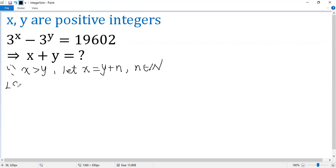So the left side can be written as 3 to the power of y plus n minus 3 to the power of y. We take the common factor 3 to the power of y out, and then times 3 to the power of n minus 1. In order to solve this equation, we also need to express the right side in this form. That means we need to extract the factor of 3.